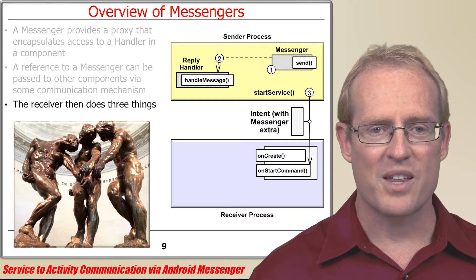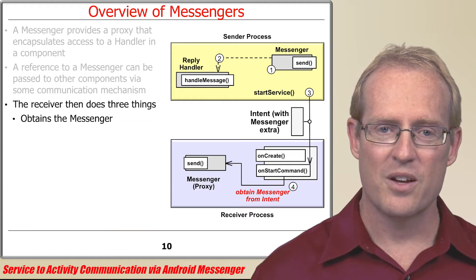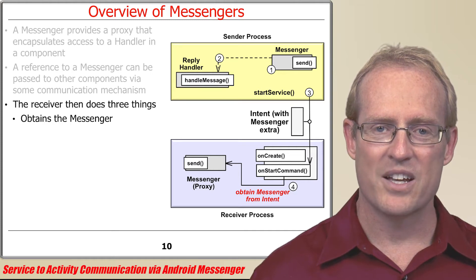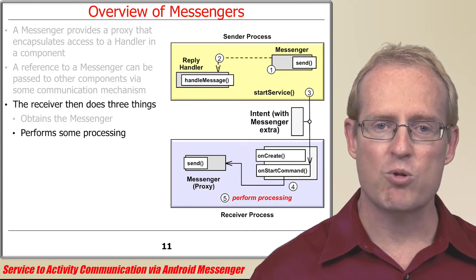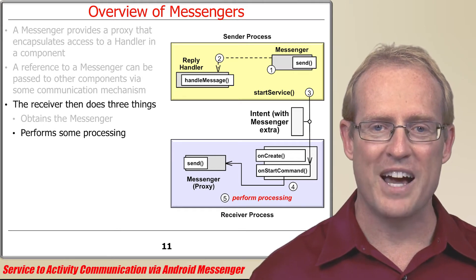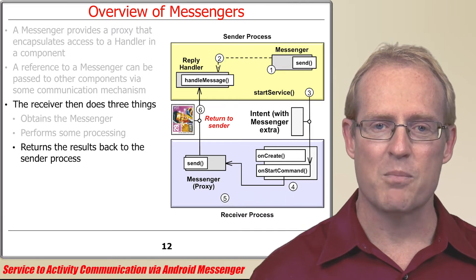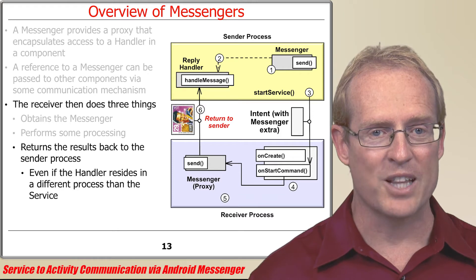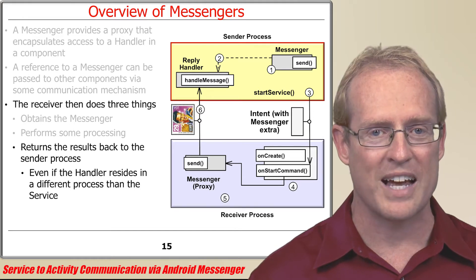The receiver then generally does three things. First, it obtains the Messenger, for example by extracting it as an extra from the intent. Second, it performs some processing, such as retrieving an image from a remote server and storing it in a file on the device. Third, it uses the reference to the Messenger to send a reply back to the handler in the activity, even if the handler resides in a different process than the service. For example, the download service sends the path name to the image file back to the download activity.